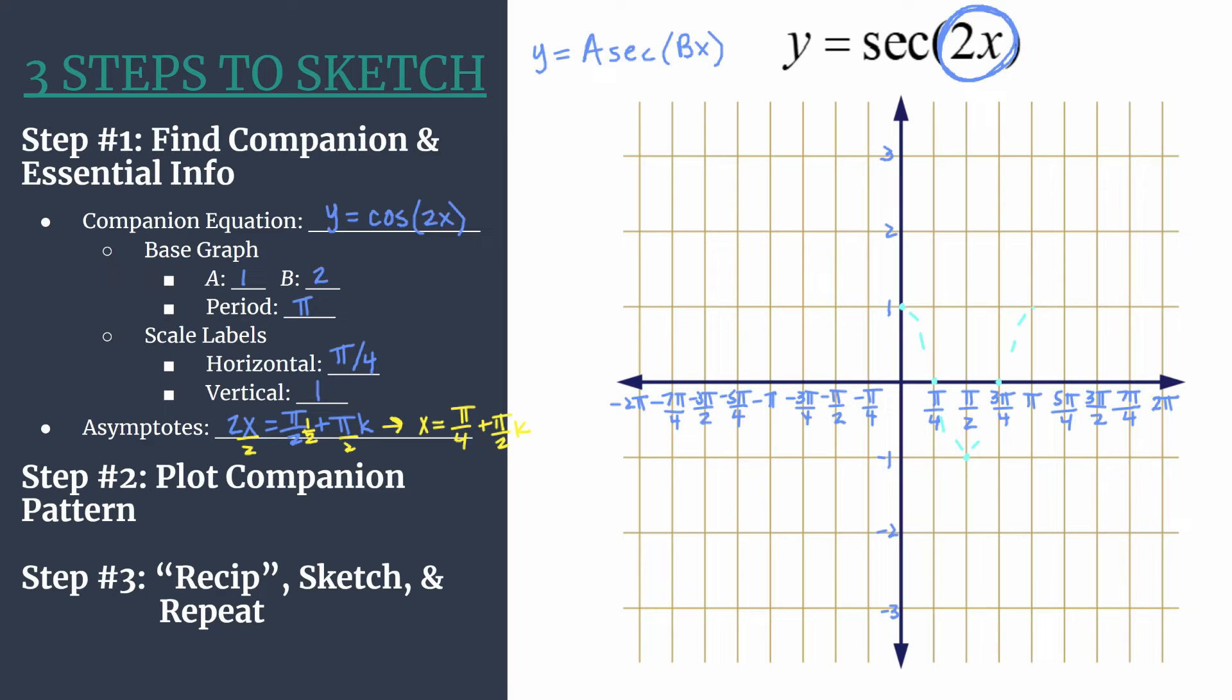So now we're ready for step three. And this is the big step. We did all that preliminary work, we sketched our companion pattern, and now we're going to re-sip. So that's kind of the verb form of take the reciprocal, sketch, and repeat. This is where you're turning your cosine graph into the reciprocal graph, secant.